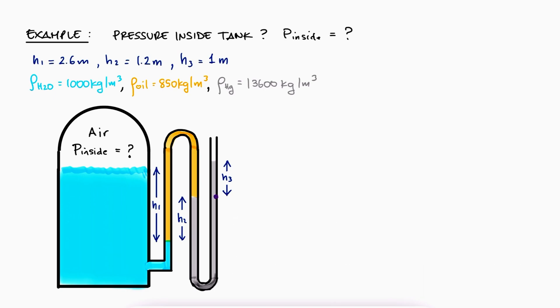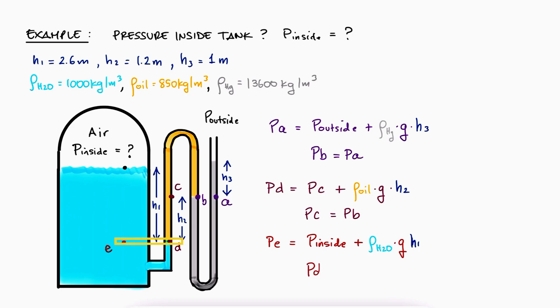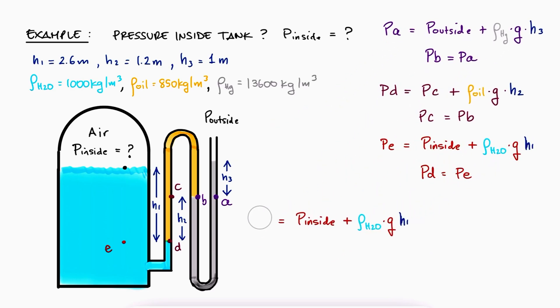From what we learned today, we know that the pressure at A is the outside pressure plus the column of mercury. And if we go from A to B, we are in the same continuous fluid and therefore PA and PB are equal. PD is equal to PC plus the column of oil, but again, PC and PB are the same. And since PE can be written as P inside plus the column of water, and PE is equal to PD because they're at the same height, we can substitute PE for PD, which is already in terms of PC or PB or even PA to obtain an equation that relates the inside pressure with the outside pressure.